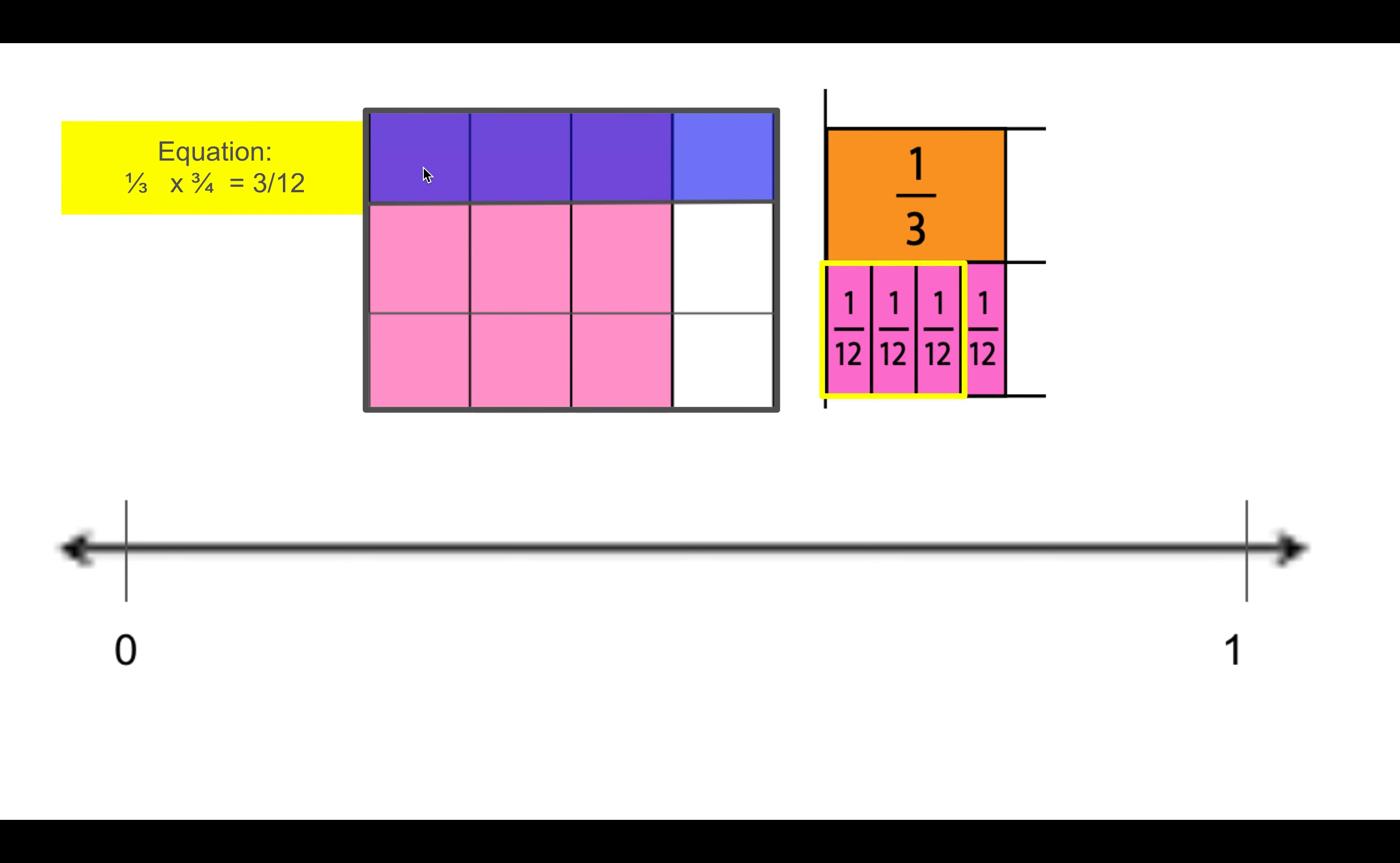This equation shows one third times three fourths. So first I'll find one third of the number line. So I divide it into three pieces. Then I take that one third and I divide it into fourths.